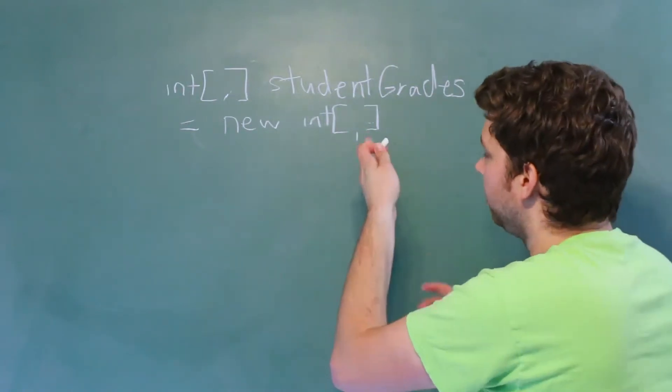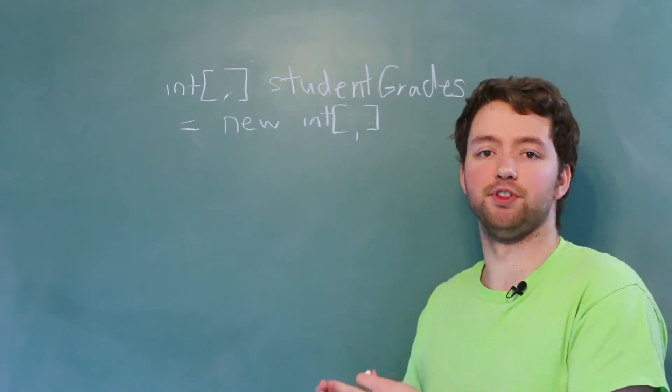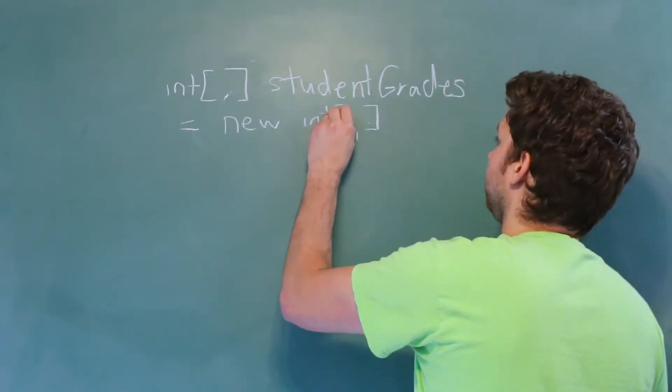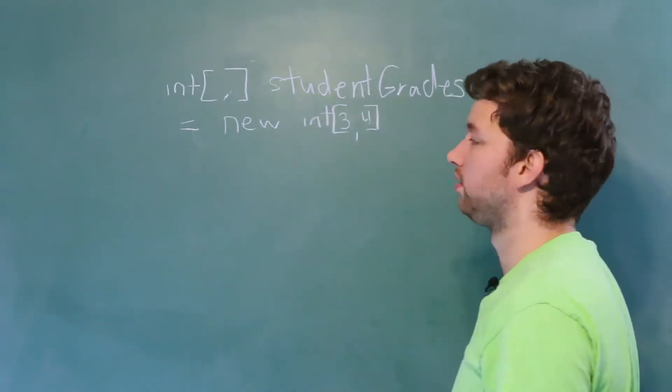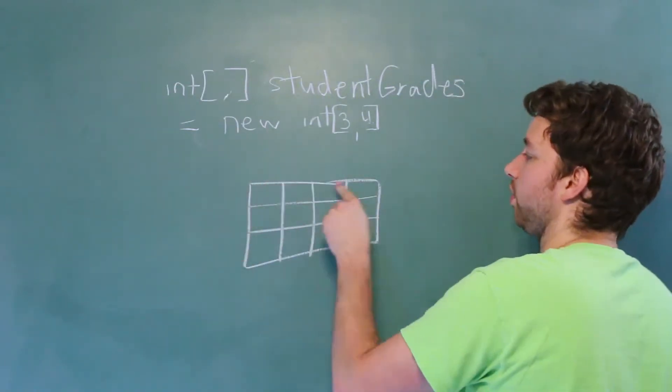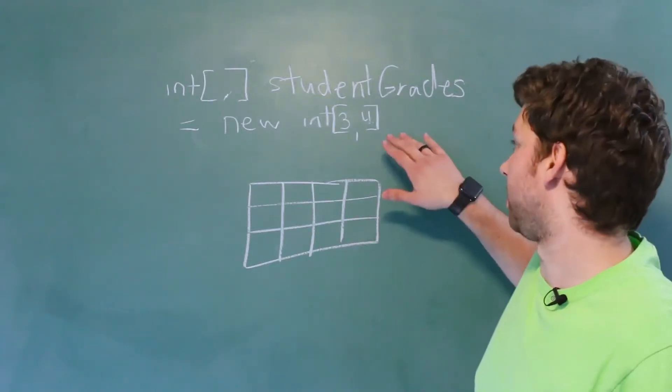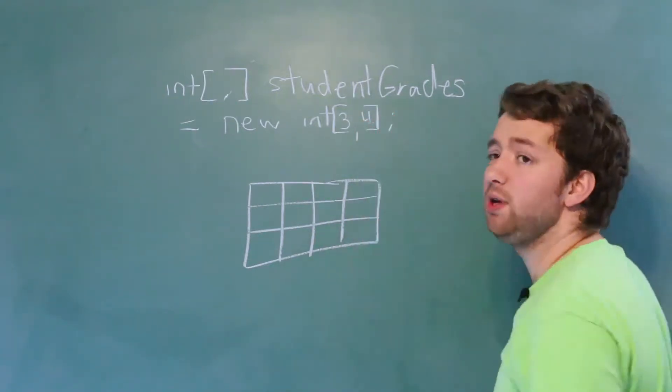What you're going to do is you're going to put two values in here. The first one for the number of rows, the second one for the number of columns. So for example, we could do three and four. When you do that, this is what it's going to look like: three rows, four columns. So if this is a structure you're going for, that is how you would do it.